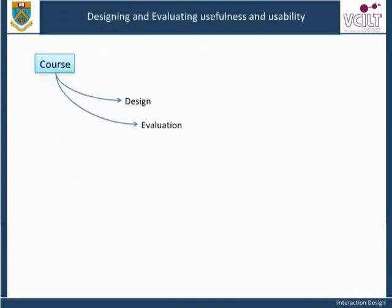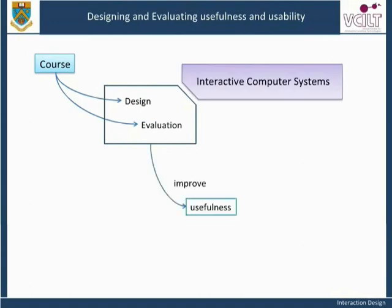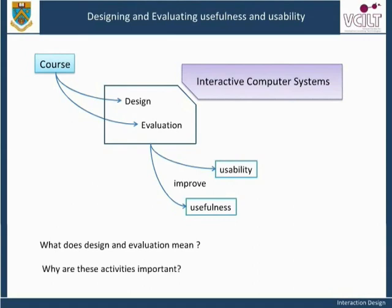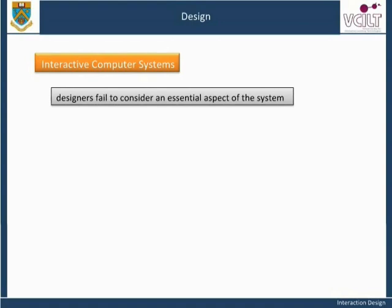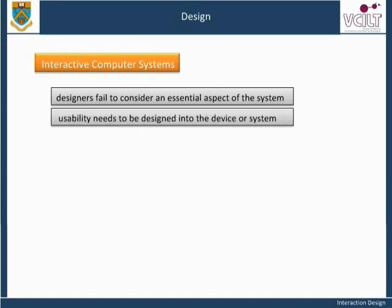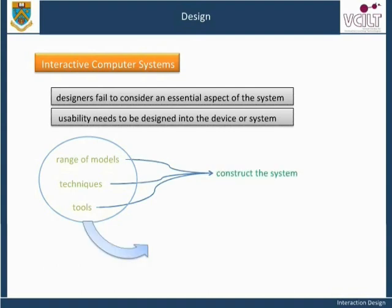This course is about the design and evaluation of interactive computer systems in order to improve usefulness and usability. Unfortunately, sometimes when an interactive system is built, designers fail to consider an essential aspect: the human factor. For successful interactions, usability needs to be designed into the device or system. There are a range of models, techniques, and tools that can be used to construct the system. All of these methods attempt to center the design on the user group, which is why they are collectively known as user-centered design, or UCD.